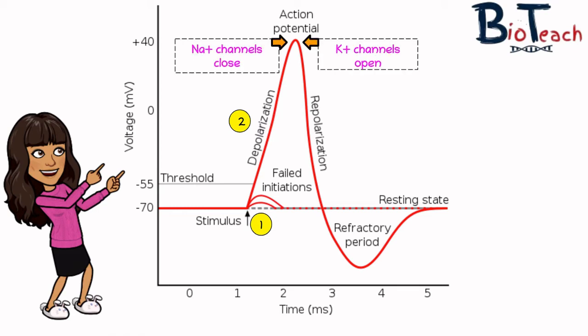When the potential difference reaches plus 40 millivolts, this is the peak of the potential. At this stage, the sodium ion channels close and the potassium channels open. The membrane becomes more permeable to potassium, so potassium ions diffuse out of the neuron down the potassium ion concentration gradient. This process is known as repolarization, and it restores the negative charge to the cell interior.